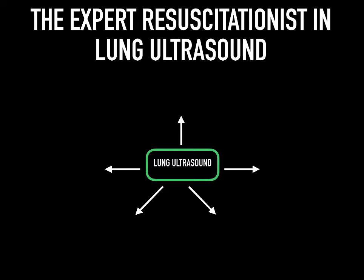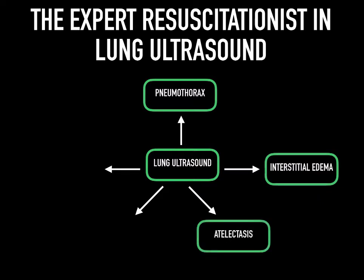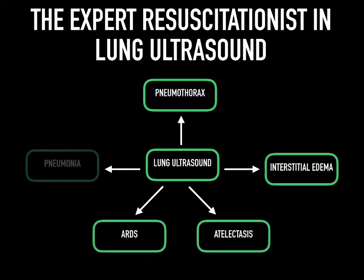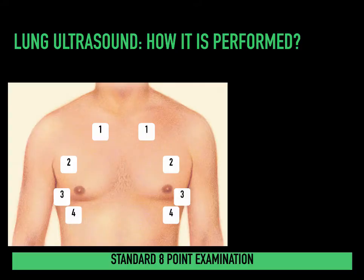The expert resuscitationist in lung ultrasound would have versatility and be facile at diagnosing pneumothorax, interstitial edema, atelectasis, ARDS, and pneumonia. So how do we perform lung ultrasound? There are really four cardinal points on either side of the thorax: number one, the anterior chest wall mid-clavicular line; number two, anterior axillary line; number three, mid-axillary line; and fourth, the posterior thorax or posterior chest wall, commonly referred to as a PLAPS point.